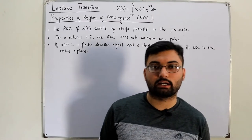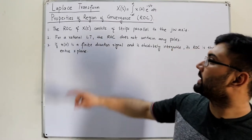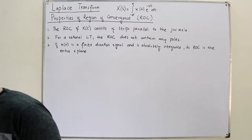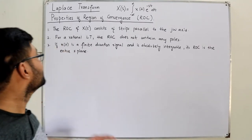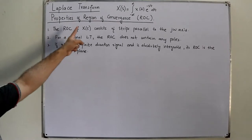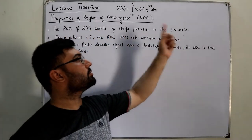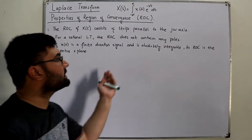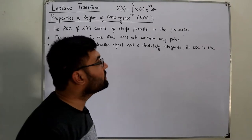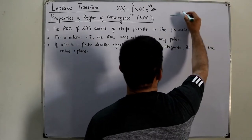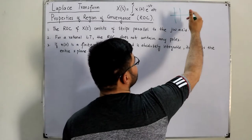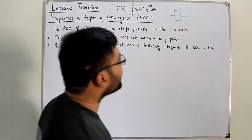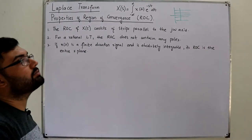Assalamu alaikum, so Allah Khan here, and today with the next topic: the properties of the ROC — properties of the region of convergence. The first property is that the ROC of a Laplace transform consists of strips parallel to the jω axis, or it is a line parallel to the jω axis. From the examples we've seen, when I draw a line it is always parallel to the jω axis.